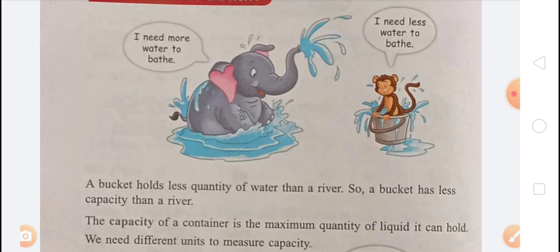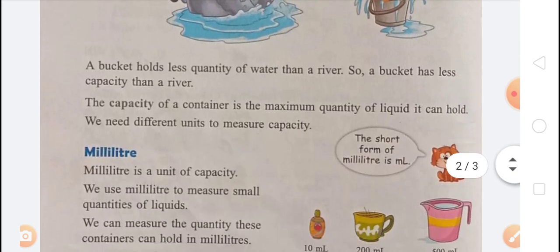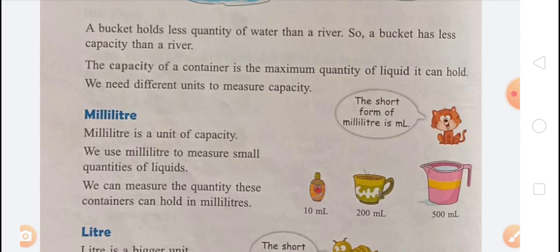We need different units to measure capacity. First is milliliter, with short form 'ml' (m small, L capital). Milliliter is the unit of capacity; we use milliliter to measure small quantities of liquid, such as a cup, glass, oil bottle, or mug.